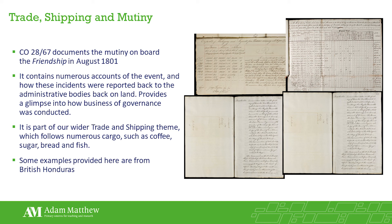It would appear the crew members committed the mutiny and then left the ship together and were not seen by those interviewed on the event. There is also an ongoing narrative of how the true destination of the trip seems to have been unknown to the majority of the crew, known only by the first examinant and the boatswain. It contains numerous accounts of the event and how these incidents were reported back to administrative bodies on land, providing a glimpse into how the business of governance was conducted. The account is exceptionally detailed, and the language much more long-winded than you'd find in a modern account today.